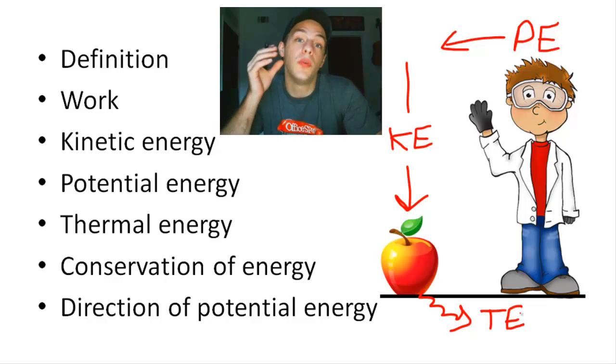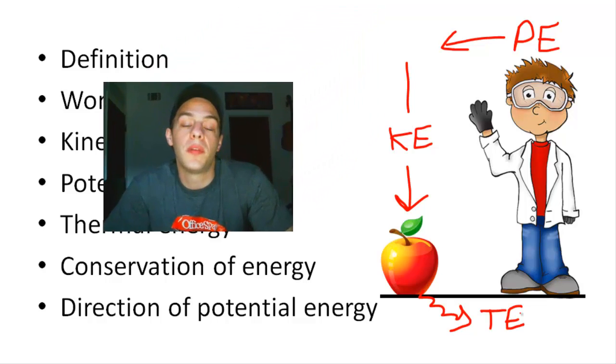So the apple was unstable when it was being held up because it had a lot of localized potential energy. And it fell down in order to reach a much more stable state with a lower potential energy.